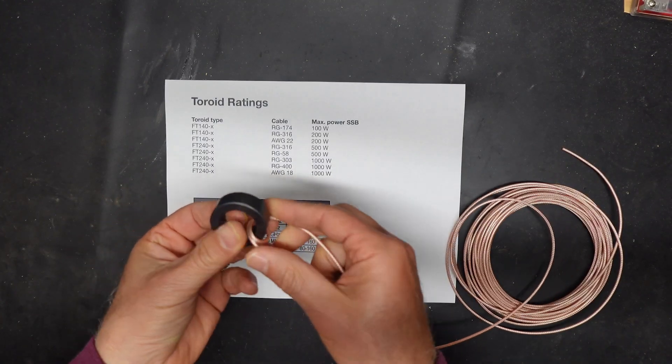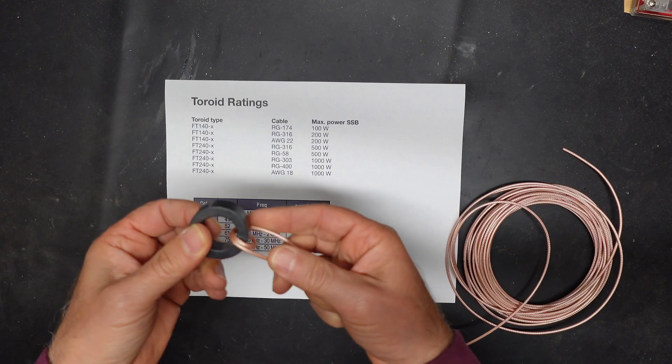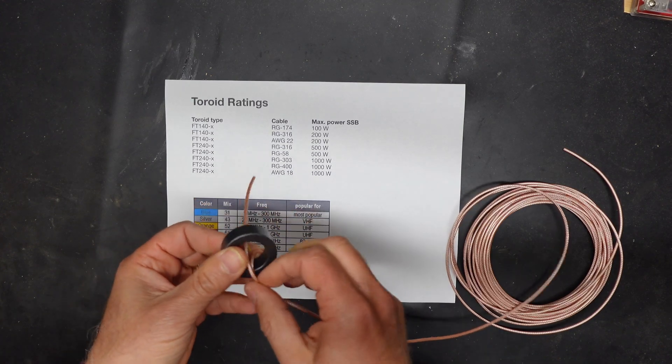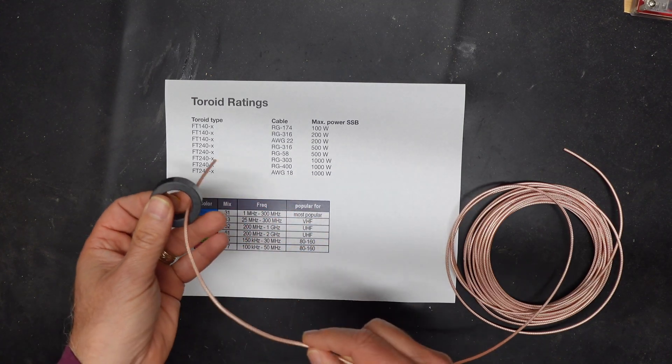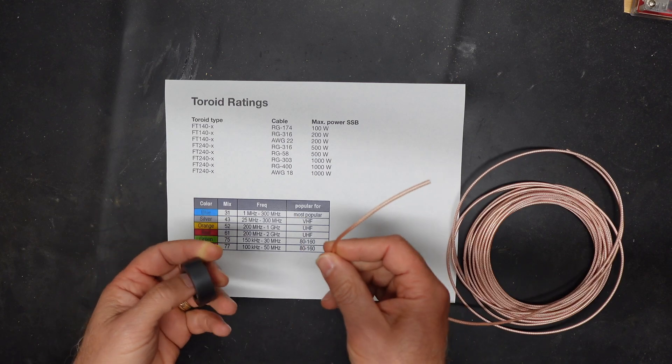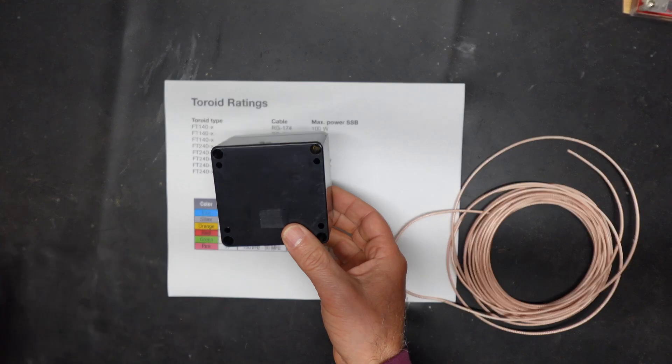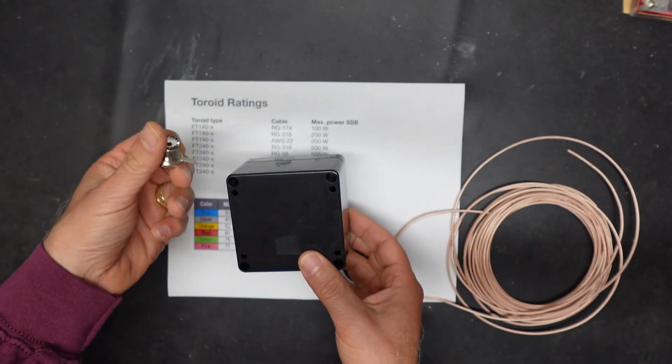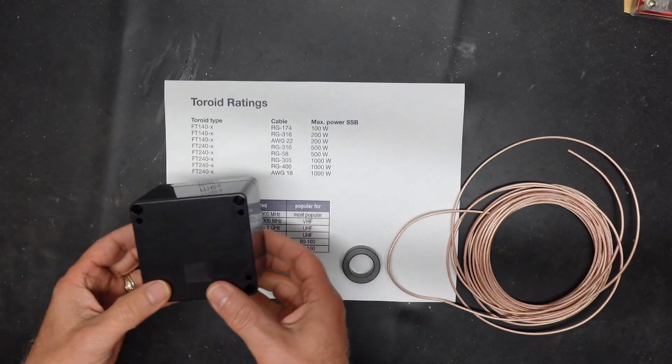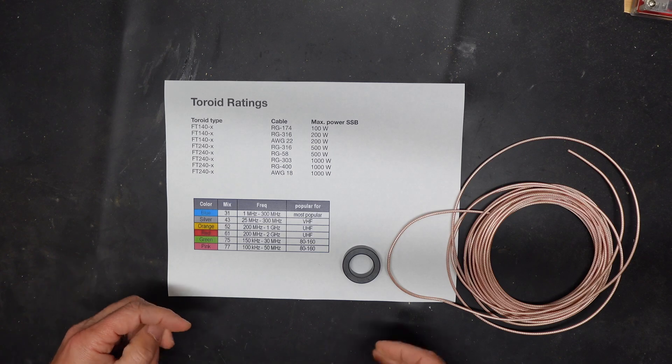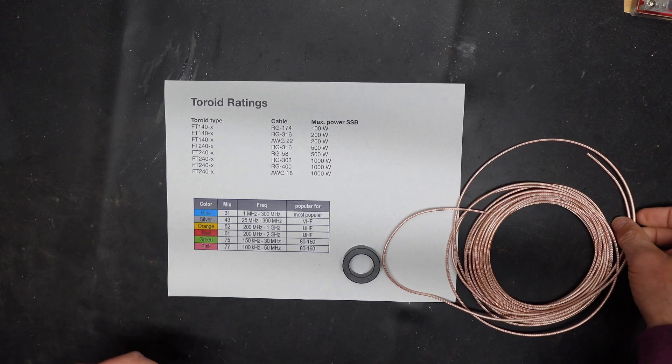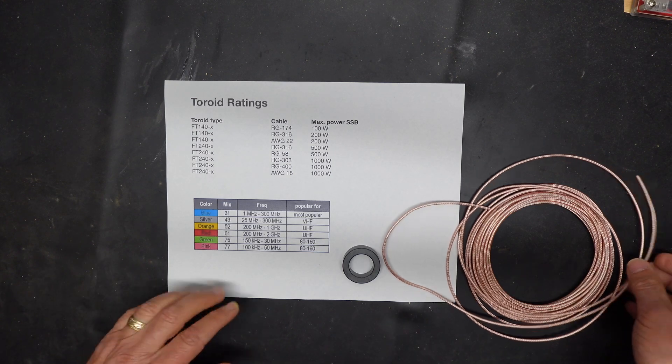It's really important that when you make these windings that it is tight and thicker coax just won't cut it so I'm using this coax for that purpose. And then I'm going to put this into a little box, a little project box. I have a couple of UHF connectors and that's basically the project. It's pretty simple to do, it's a lot of fun so we're going to do that.